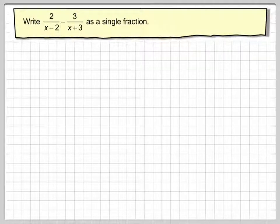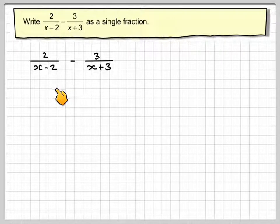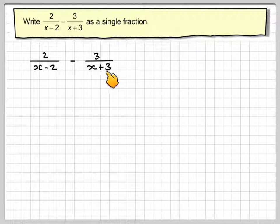In this video we're going to write these as a single fraction. We notice that x is actually now in the denominator, so it says write 2 divided by x minus 2 minus 3 over x plus 3 as a single fraction. So we've got 2 over x minus 2 minus 3 over x plus 3.